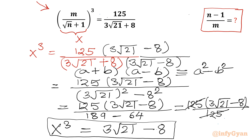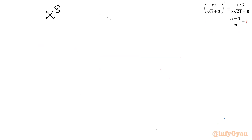Now one conclusion: since 3√21 is greater than 8, x³ is greater than 0, so x must be positive. So x³ = 3√21 - 8, and since x³ is positive, x is positive.